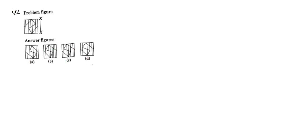Let's consider the left side here — we have a very thin first line, then a thick line second. Since we've considered the left side of the question figure, we need to consider the right side of the options for the mirror image. In option A, we have a thin line then a thick line, so A can be a possible answer. In option B, we have a thin line and again a thin line, so option B cannot be correct. In options C and D, we have thin then thick. This property eliminates option B.